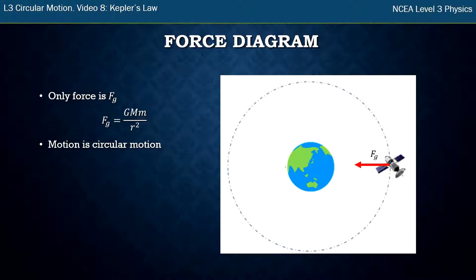The satellite goes around in circular motion, and the centripetal force is given by this formula: mv squared over r. Because force of gravity is the only force, it makes up the total force, so we can equate those two formulas.